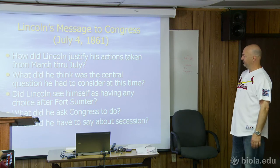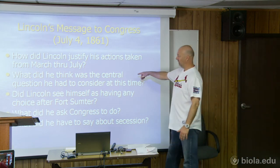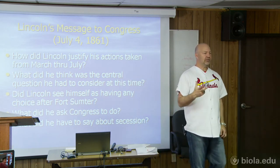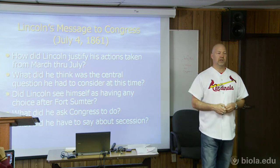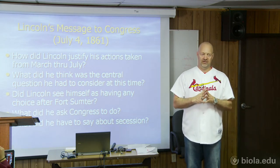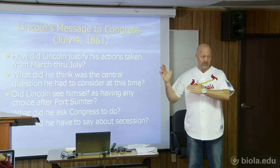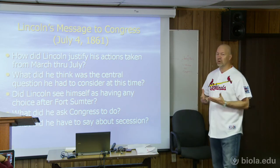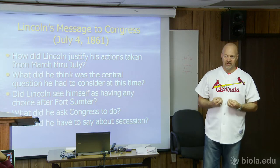Lincoln is going to make an argument that constitutionally justifies all of his actions in the famous July 4th address to Congress. This will be a key point: what did he think the central question was as he stood before Congress in July of 1861? He says there's a central question he poses to whatever senators and congressmen were left — because half of them went to be with the South. There's a central question they need to ask themselves in consideration of what he had done.